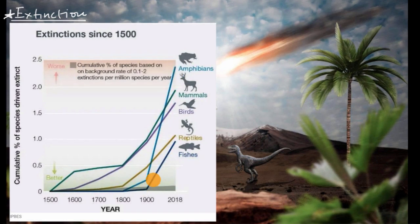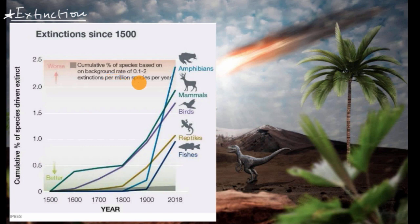Some of you might be thinking: isn't there always some baseline level of extinction? Maybe this isn't so much worse than that baseline. What's interesting about this graphic is it shows us the baseline — this little gray square. They're saying that's the cumulative percentage of species based on a background rate of 0.1 to 2 extinctions per million species per year. So you see the baseline in this little gray area right down here. If we didn't have unusual amounts of extinction, we would just be charting roughly close to this line. But you can see that since 1500, we have gone well above it.